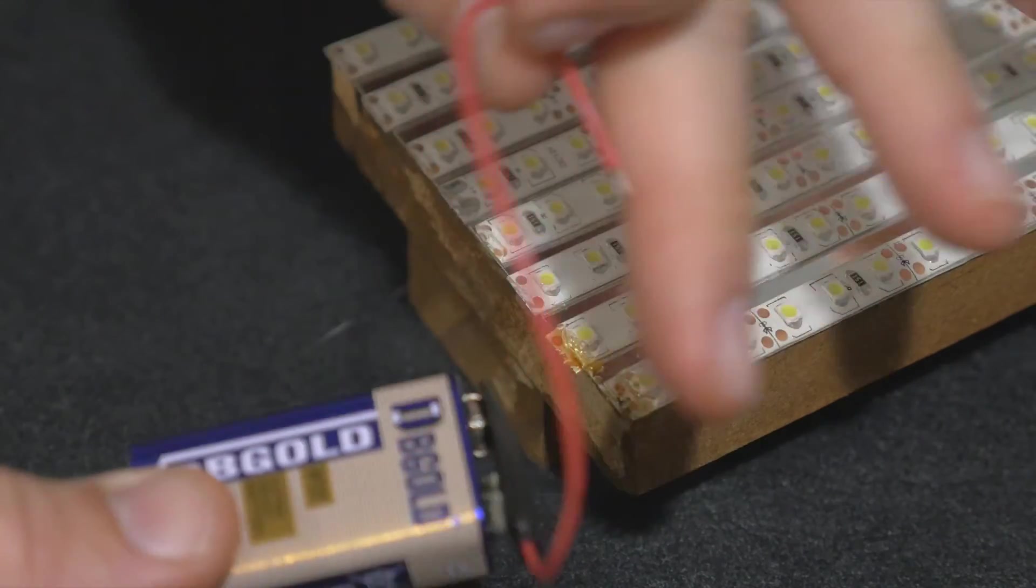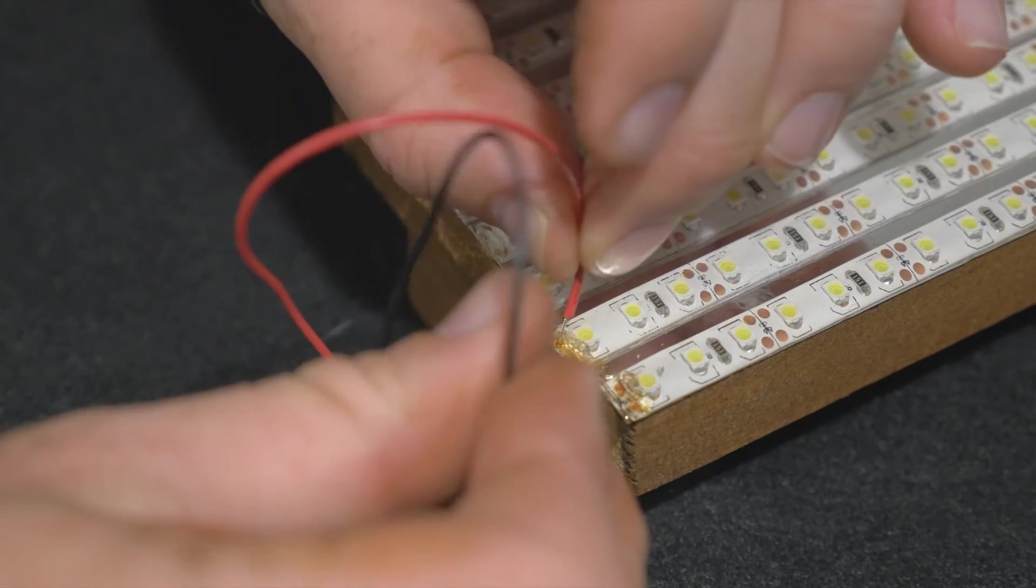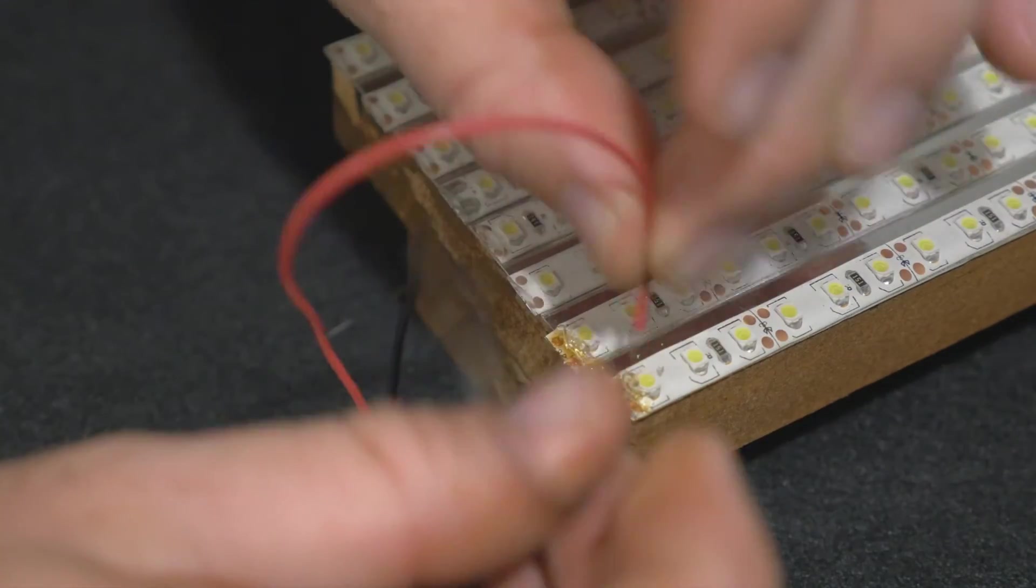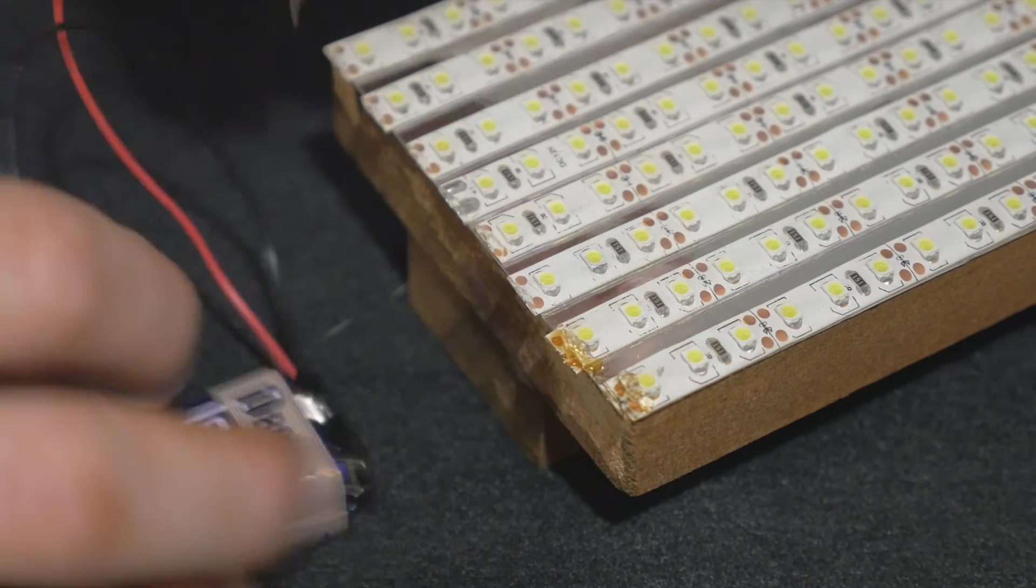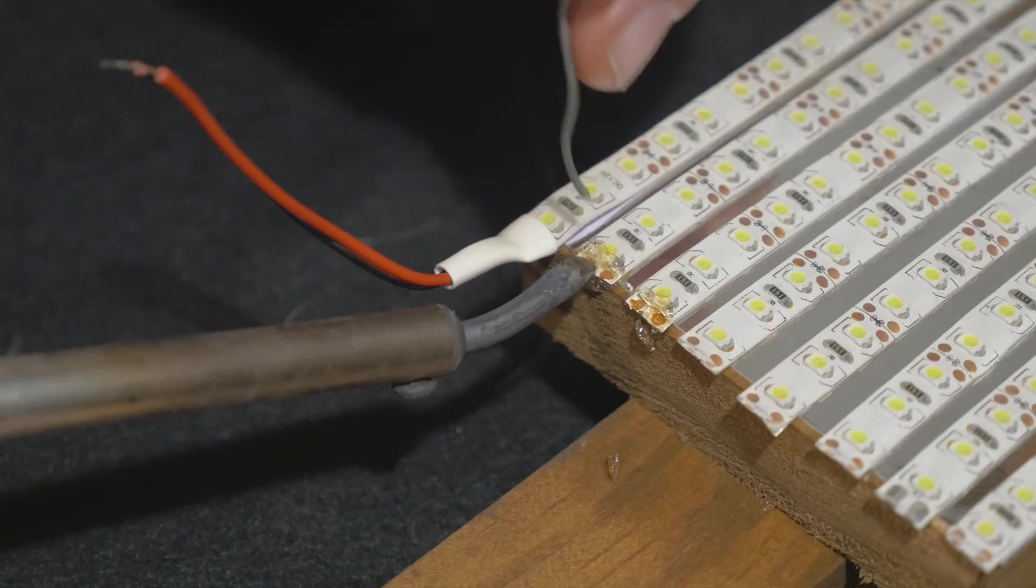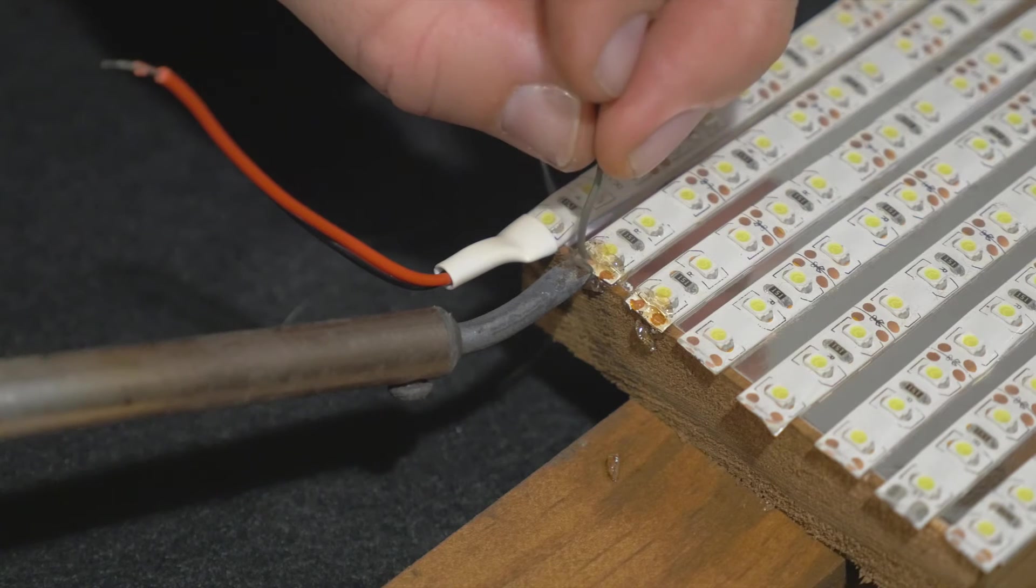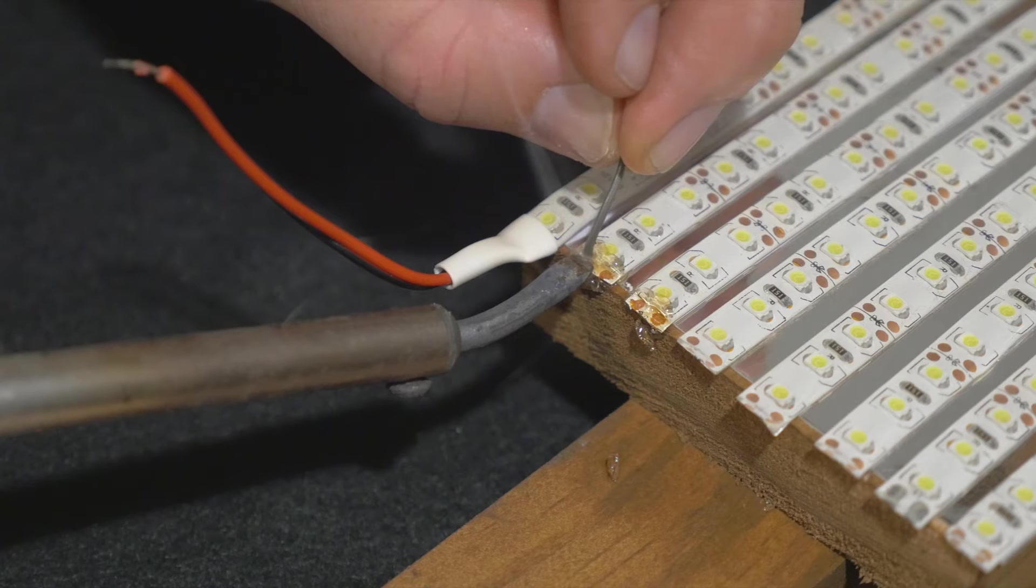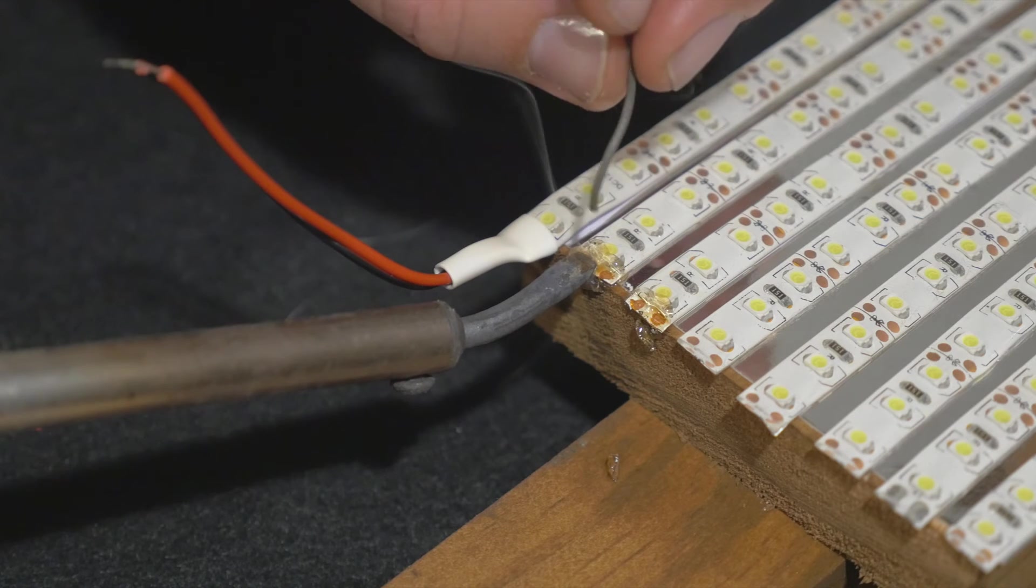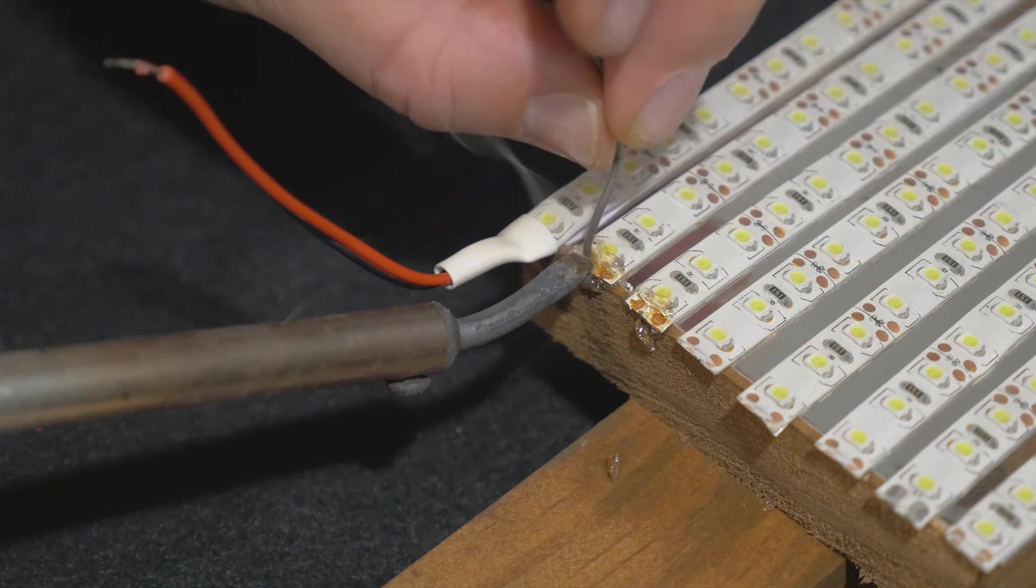As you can see I'm going to use a nine volt battery now and I'm just checking each one, make sure that they're working, but also to make sure that I've got the right side. And this is the very first solder. Again, if you have never soldered before, it's probably a good idea to go practice before you do something like this.